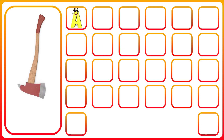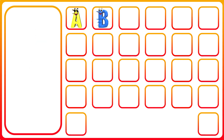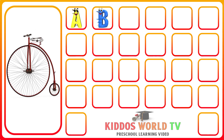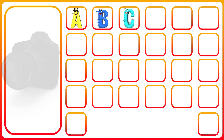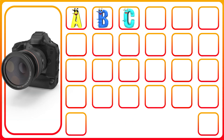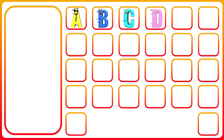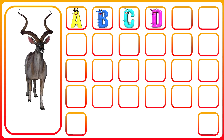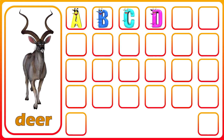A. A for axe. B. B for bicycle. C. C for camera. D. D for deer.